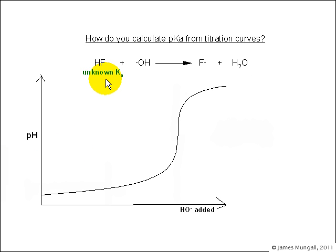Let's have a look at an example. Here we have HF titrated against a strong base. The dotted lines show the equivalence point and the point at which the reaction is half complete, and the pH at which the reaction was half complete was 3.3. So we can immediately say that the pKa of HF is 3.3.